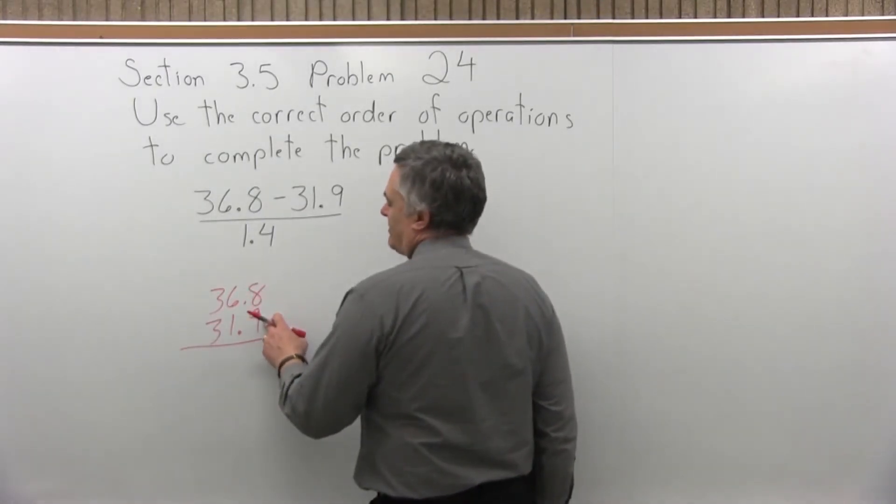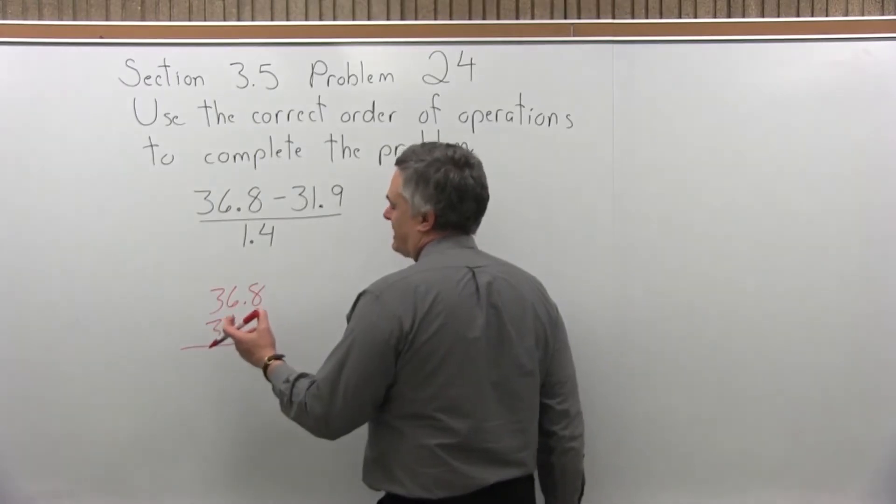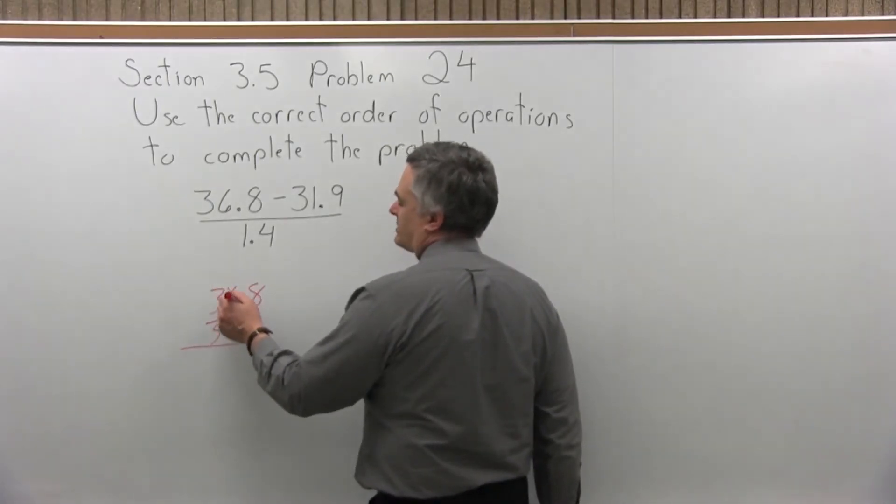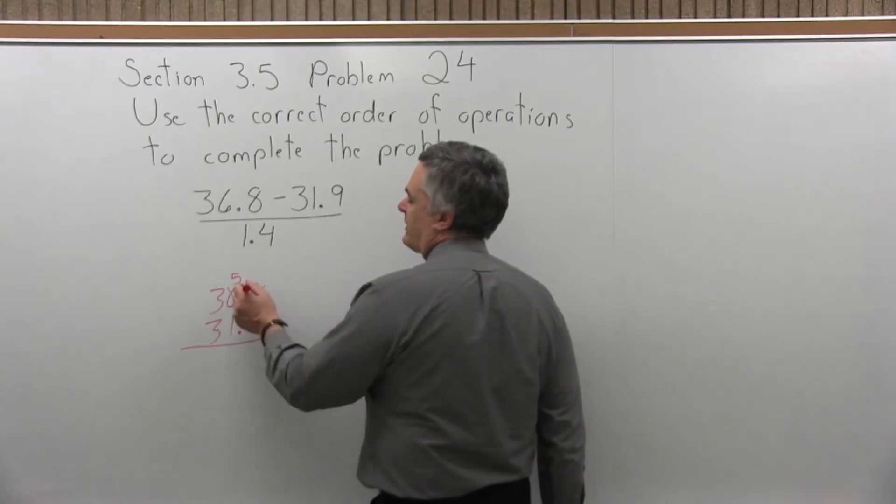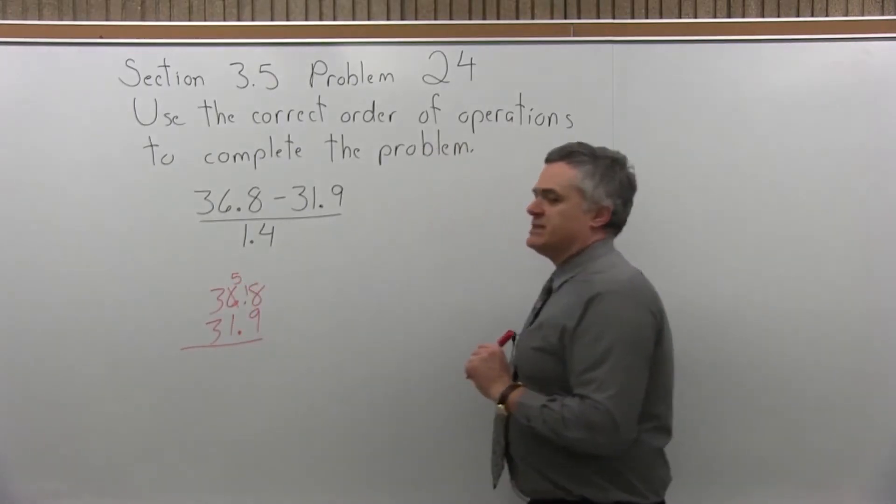So to start off with, 8 minus 9, 8's not big enough, so I'll have to borrow. So go over one spot to the 6, reduce it to a 5. That 8 can now be written as an 18.